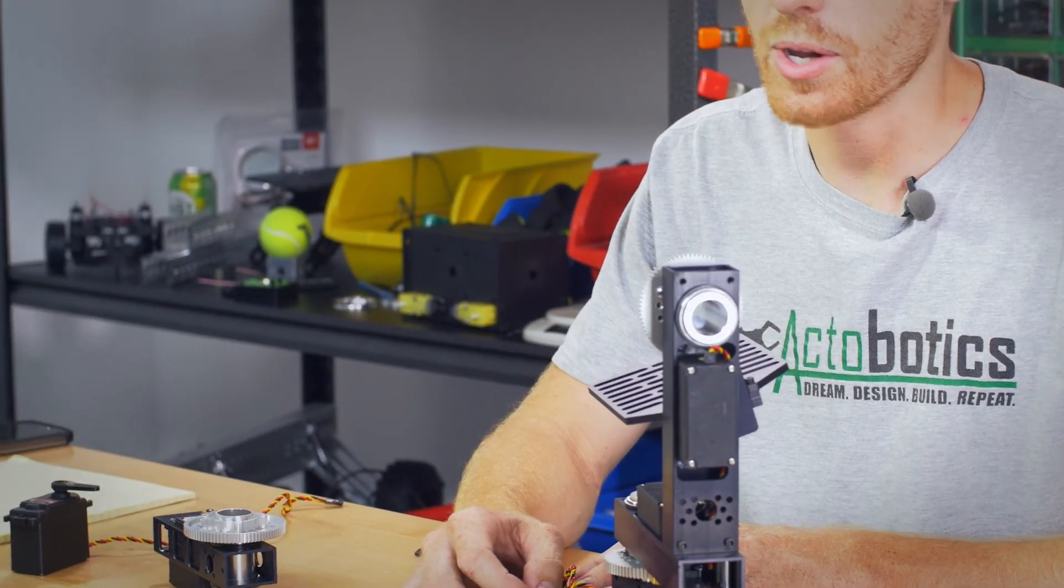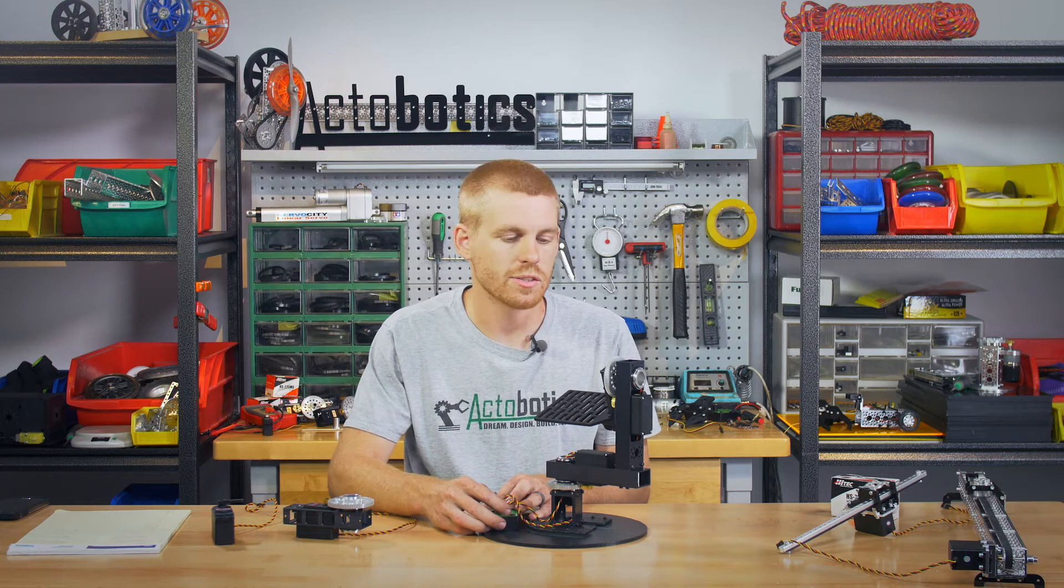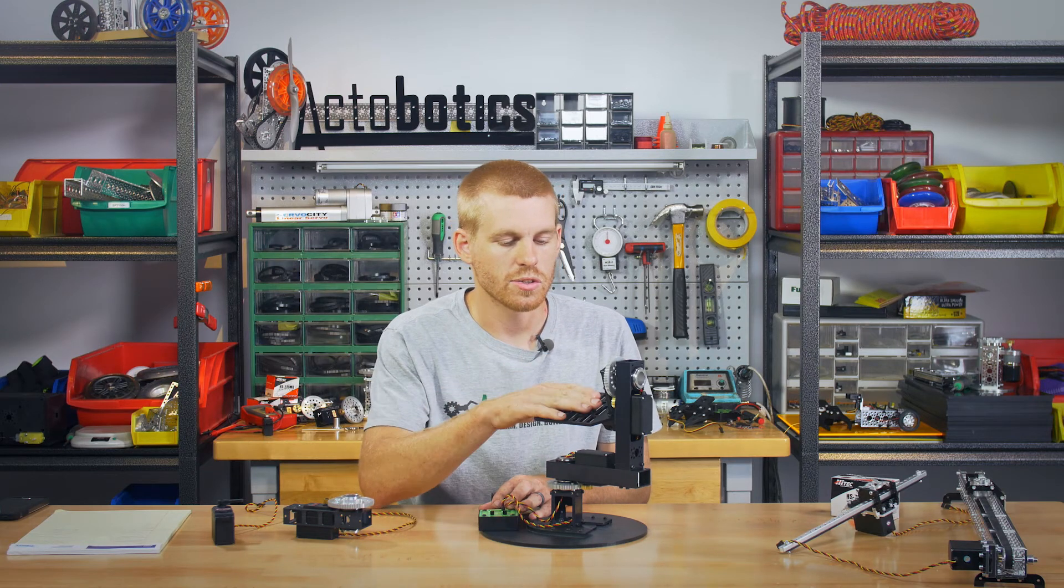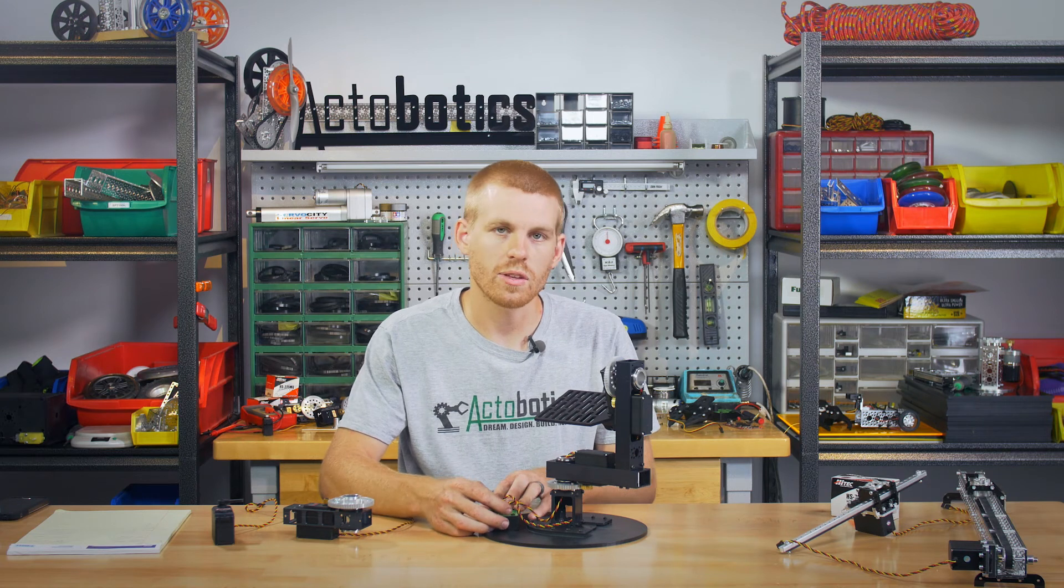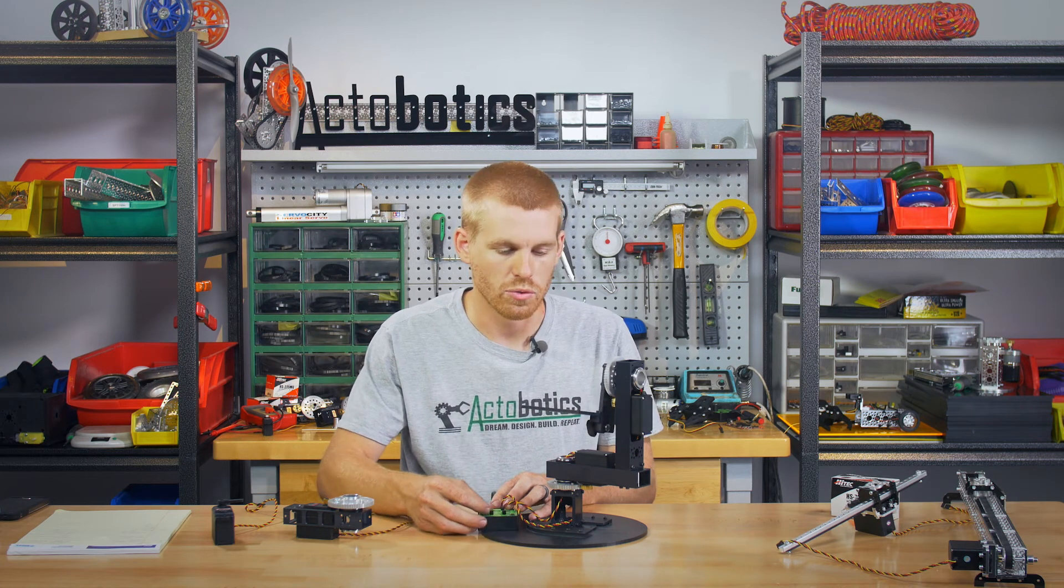This pan and tilt system is great for FPV units, guys that are wanting to put a sensor or an antenna or something like that on this to move it around and have very specific positioning because when it receives a PWM signal, it's going to go to that exact location.